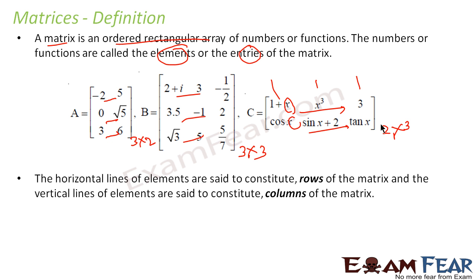So if you are not understanding order of the matrix, please be patient. We will cover in the next slide. Now let me repeat whatever I have told. The horizontal lines are called rows. Horizontal lines are called rows. And the vertical lines are called columns.